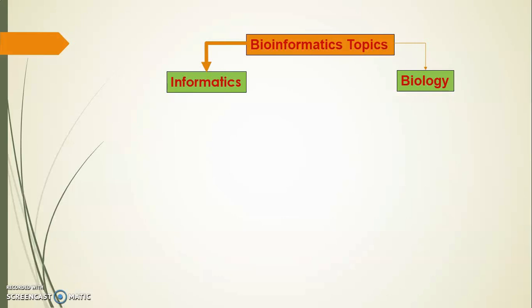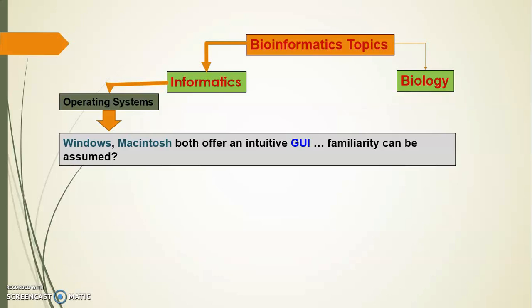The most fundamental informatics issue is the operating system. One must be able to control the computer before one can expect it to do anything useful. Currently, and many would argue unfortunately, Windows is still the most common operating system, followed ever more closely by the Macintosh operating system. Both Windows and the Macintosh offer very sophisticated and intuitive graphical user interfaces, or GUIs, with which most people under 35 have been familiar since birth.